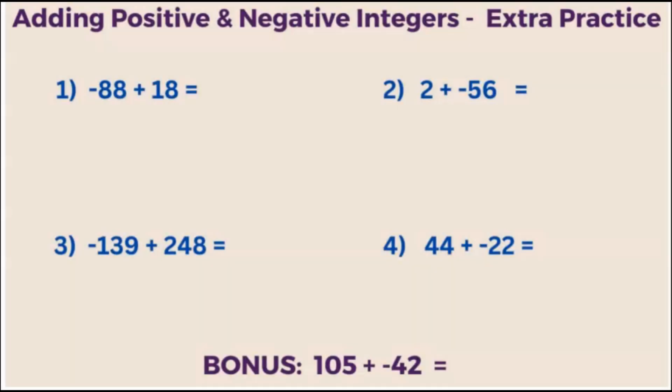In this video, I'm going to show you four more examples of how to add positive and negative integers. Remember, if you have positive and negative integers, you take the absolute value of them and subtract. The answer will be whatever sign is the largest absolute value integer.